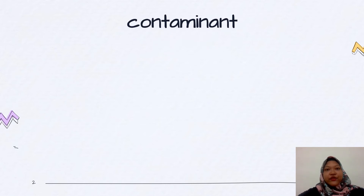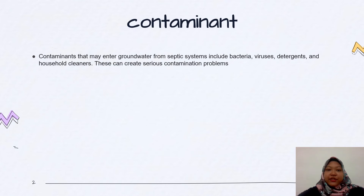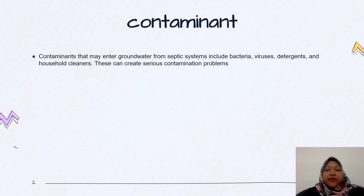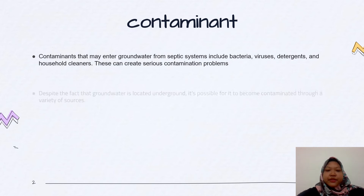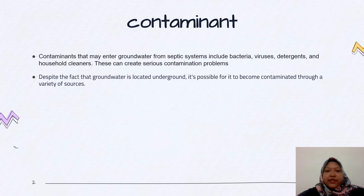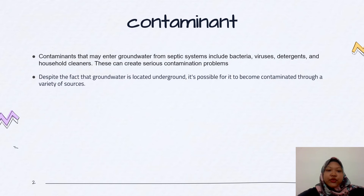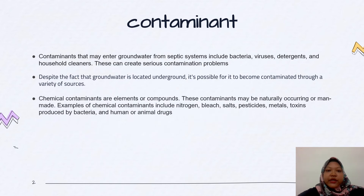First we have to know about the contaminant. Contaminants that may enter into groundwater from septic systems include bacteria, virus, detergents and household cleaners. This can create serious contamination problems. Despite the fact that groundwater is located underground, it is possible for it to become contaminated through a variety of sources.